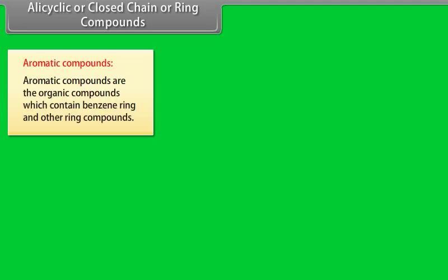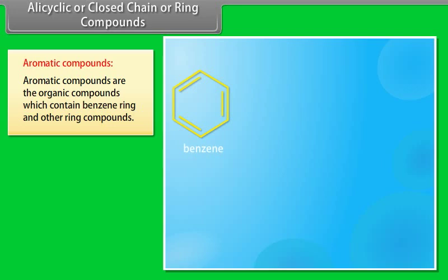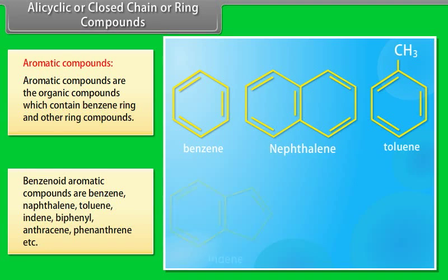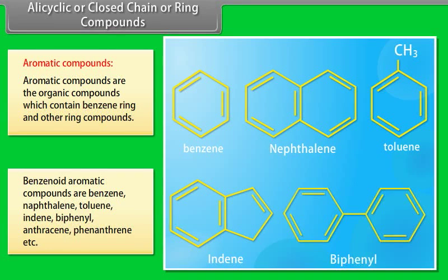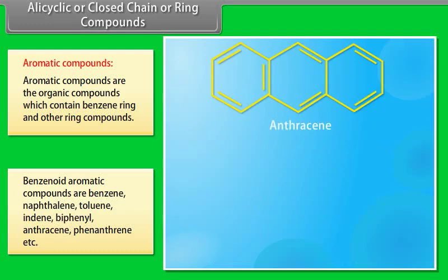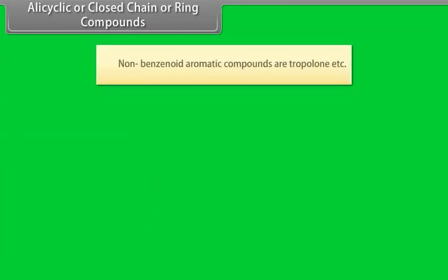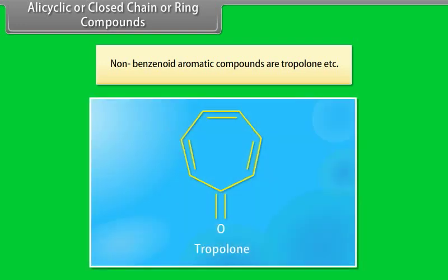Aromatic compounds are the organic compounds which contain benzene ring and other ring compounds. Benzenoid aromatic compounds include benzene, naphthalene, azulene, indene, biphenyl, anthracene, phenanthrene, etc. Non-benzenoid aromatic compounds include tropone, etc.